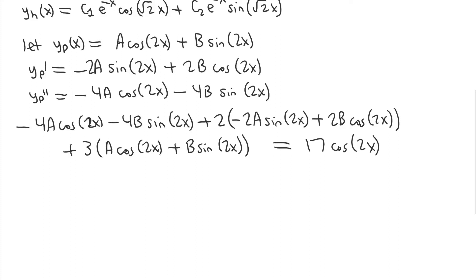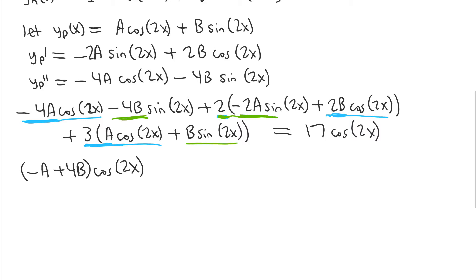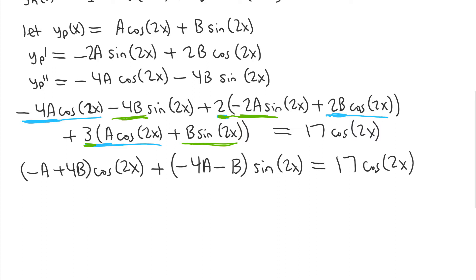We simplify the left-hand side by collecting cosine 2x terms: negative 4A plus 4B plus 3A gives negative A plus 4B of cosine 2x. For the sine terms: negative 4B plus negative 4A plus 3B gives negative 4A minus B of sine 2x. So the left-hand side becomes (negative A plus 4B) cosine 2x plus (negative 4A minus B) sine 2x, which must equal 17 cosine 2x.